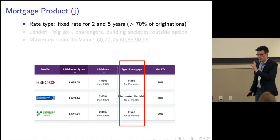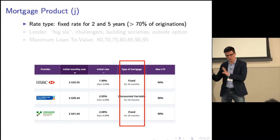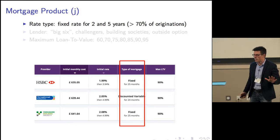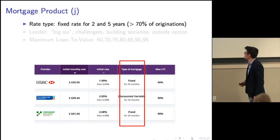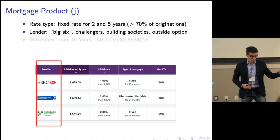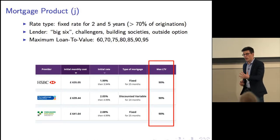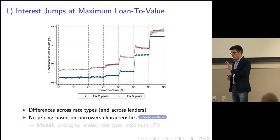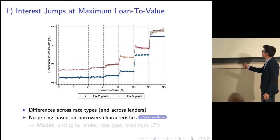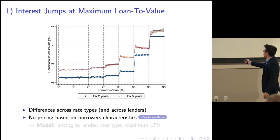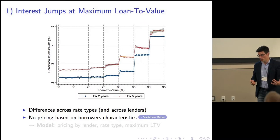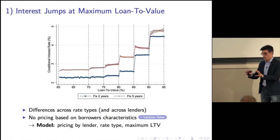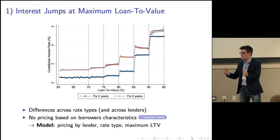The second key definition is that of a product — this is where I innovate relative to the previous literature, which only looks at lender choice. I look at product choice in the financial market. A product is a combination of three things: the interest rate term (in the UK most products are 2- to 5-year fixed, representing more than 70 percent of originations), the lender — HSBC, Barclays, etc. — and the maximum loan-to-value. This is how products are advertised and sold in the UK and also the US, in a grid based on LTV. So in the model I assume that pricing is at the lender, rate type, and maximum LTV level.